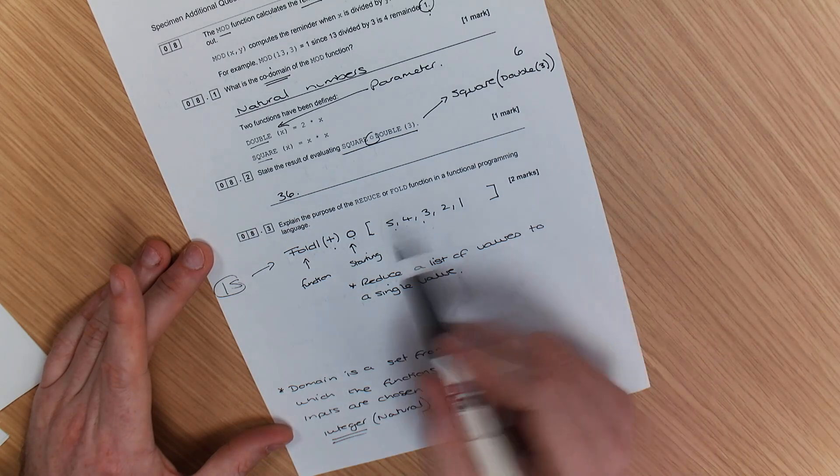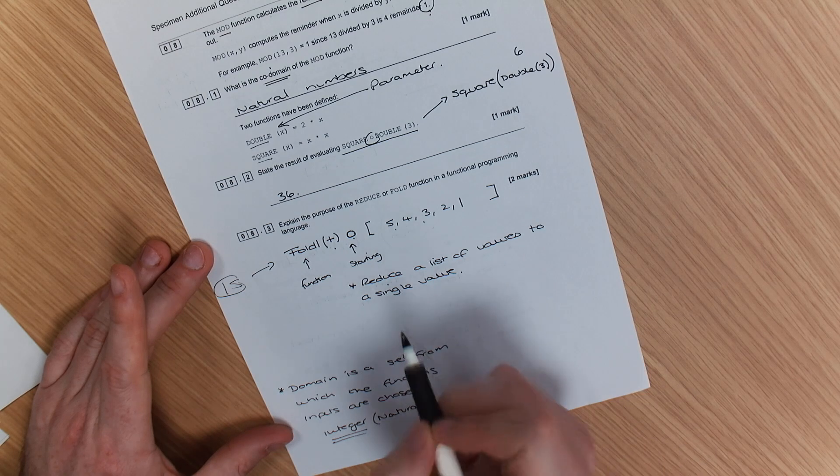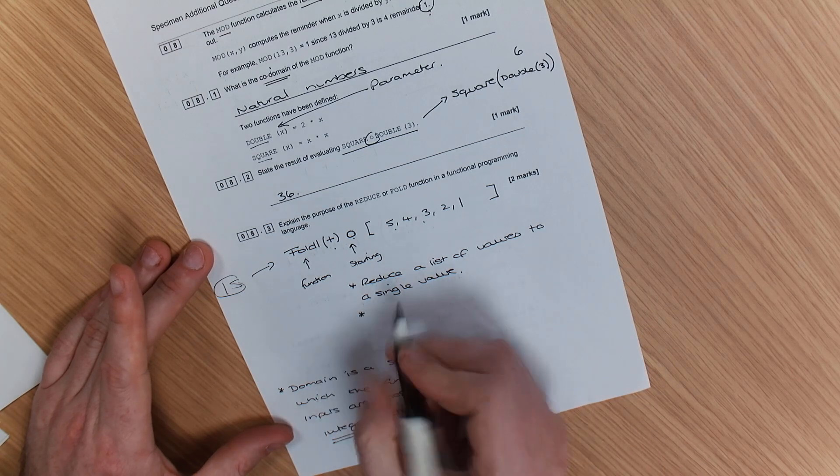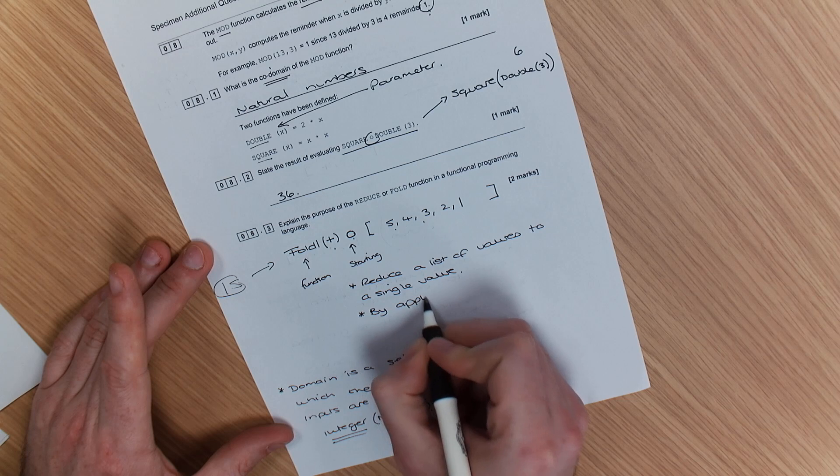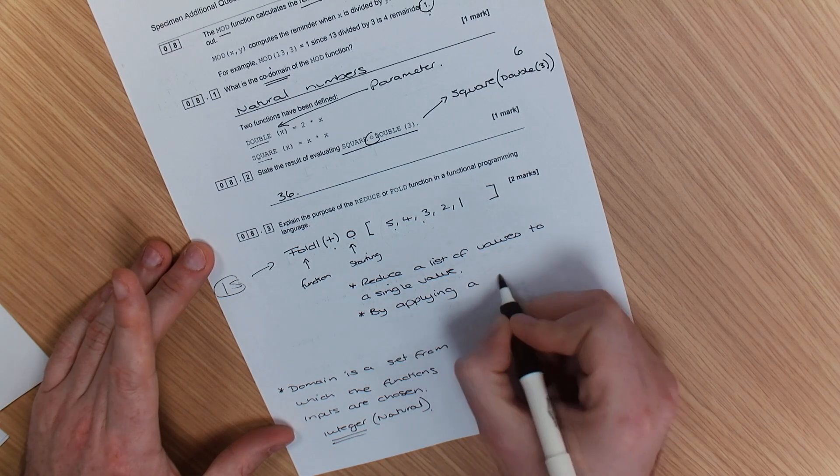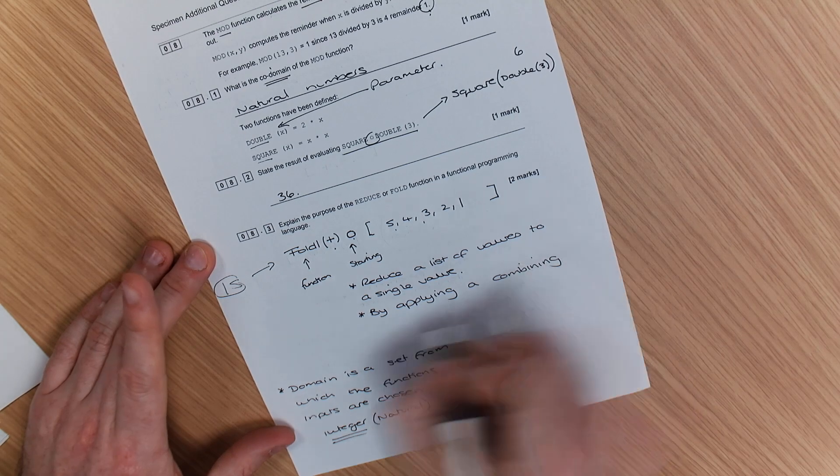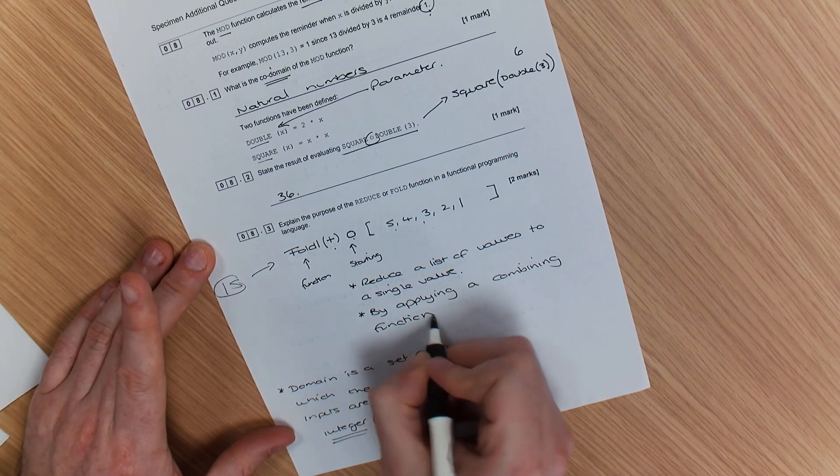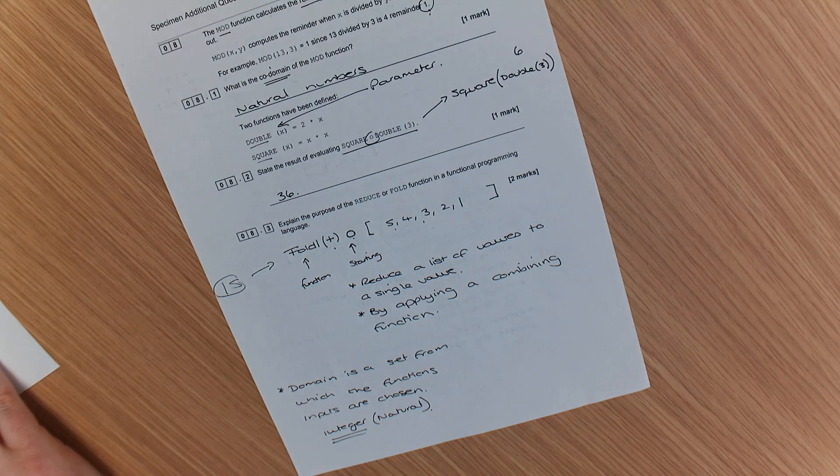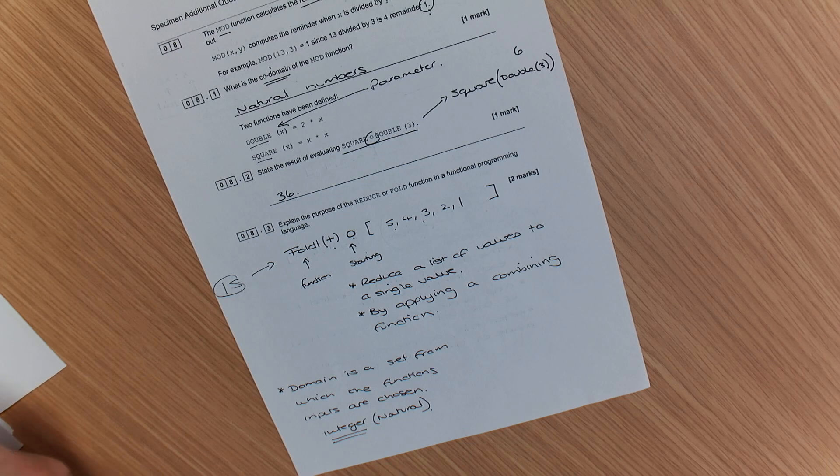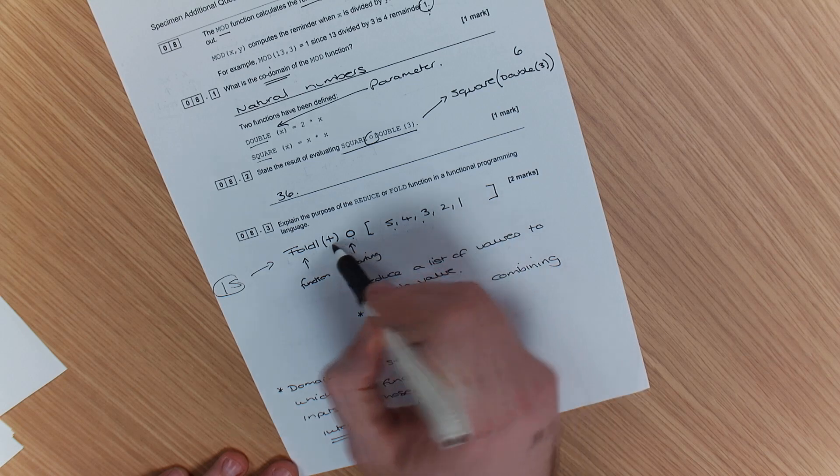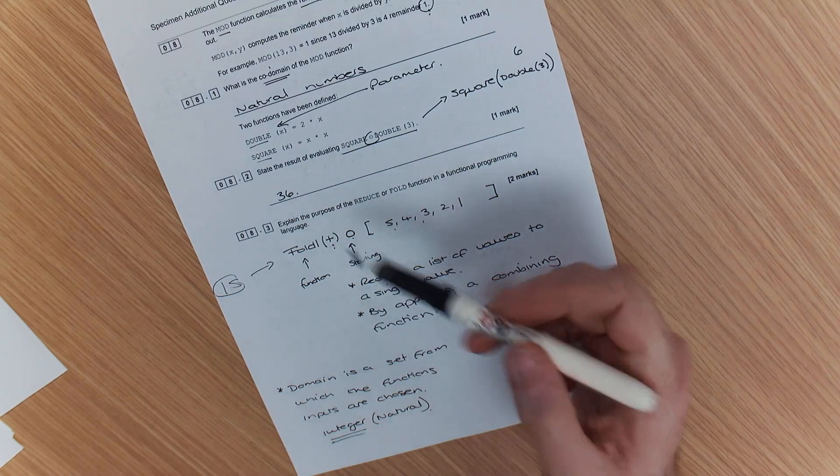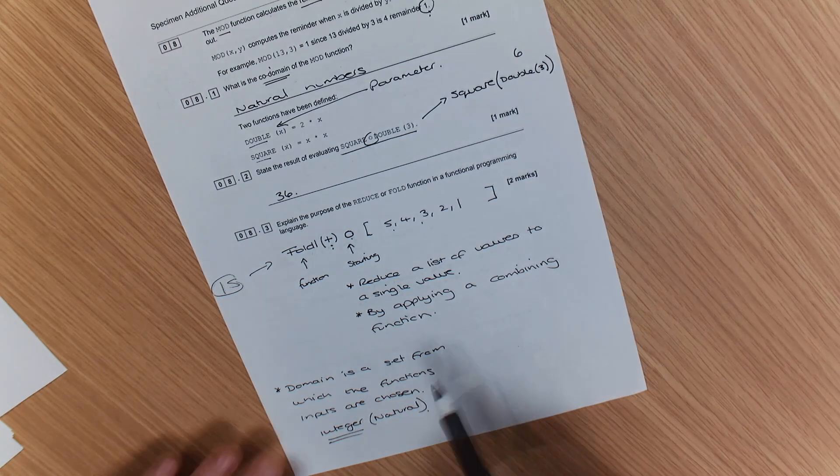The other thing, you're looking for your second mark, we have our combining function. So we have our, by applying a combining function. So what's happened there is you've gone through each of those items in the list. You've gone through each of those items in the list. And then using your function as an argument, your combining function, you are able to create a single list. Sorry, a single value.